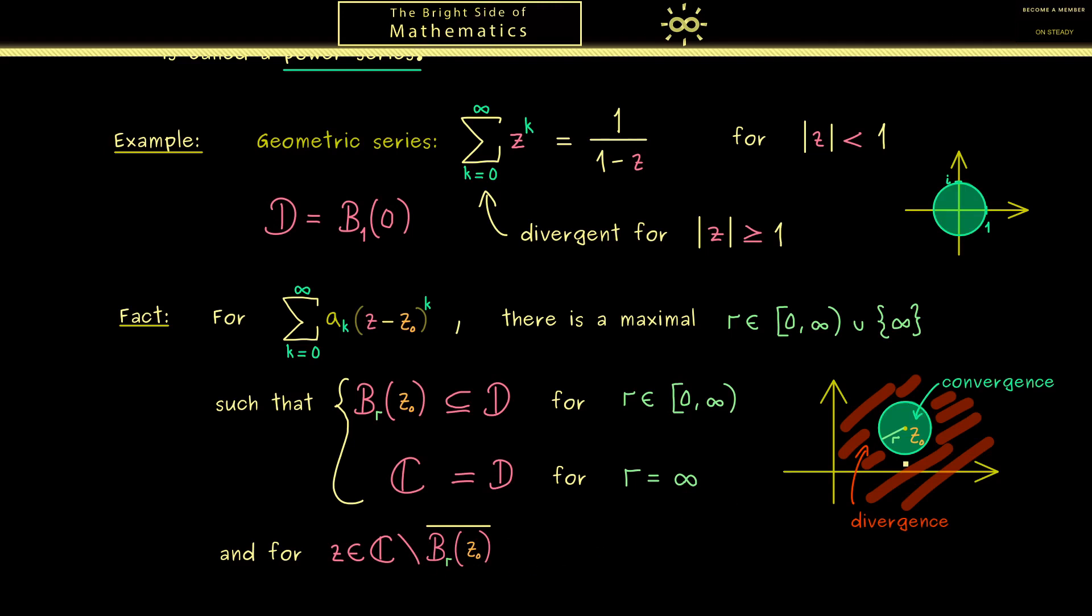We can simply do this by taking the closure of this ball. So this notation simply means this is the set including the boundary. So in this case it's not the open ball it's the closed ball. Now for points that are not in this closed ball we know that the power series here is divergent.